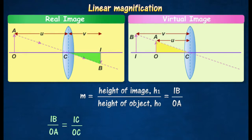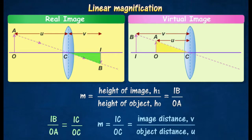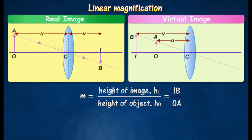The triangles CIB and COA are similar. Hence, the linear magnification M is usually expressed as follows.